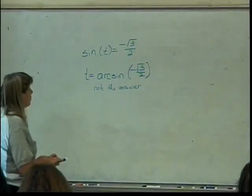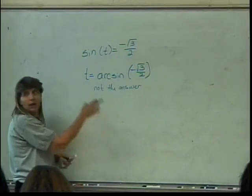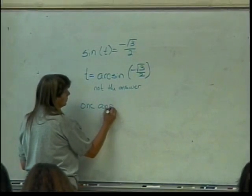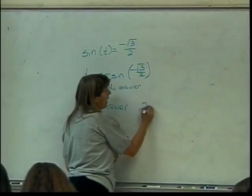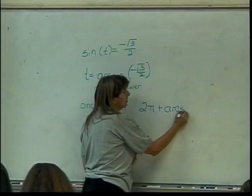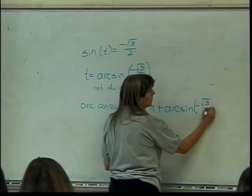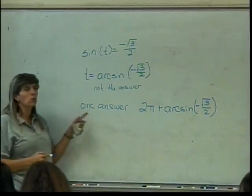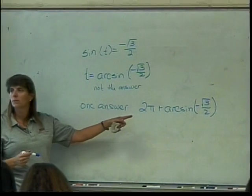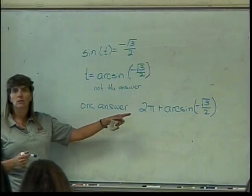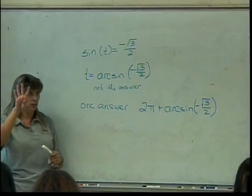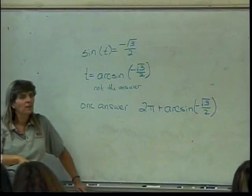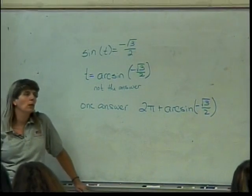I can find an angle that's just like this one by adding 2π and just keep working my way around, right? So, one answer will be 2π plus the arc sine of negative square root of 3 over 2. That's the answer. Which quadrant is that answering? It's in quadrant 4, right? I think we burned you out on the test. Nobody's brains are working anymore.